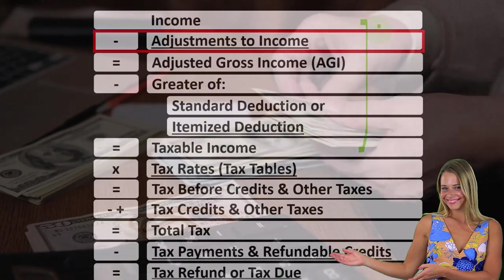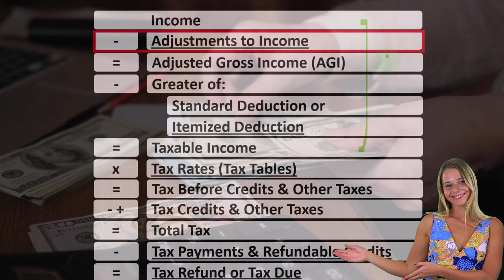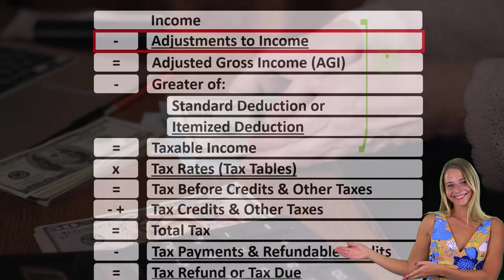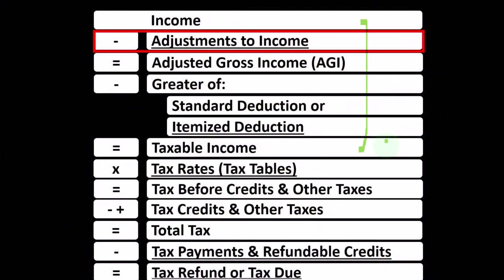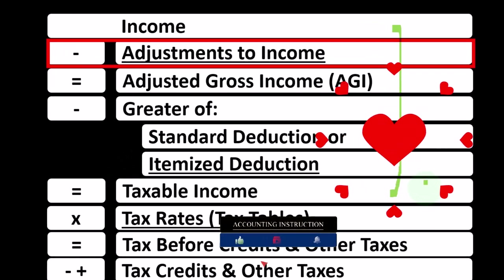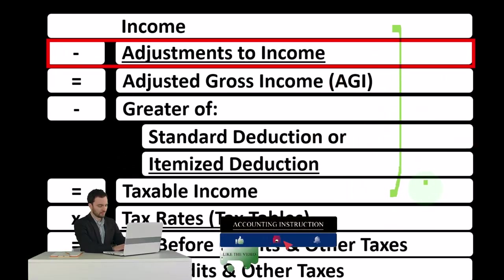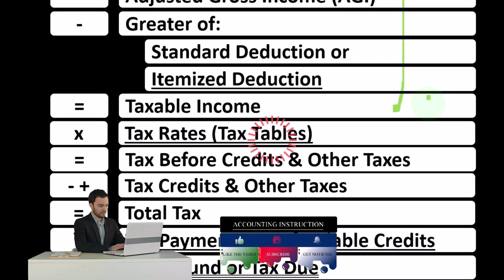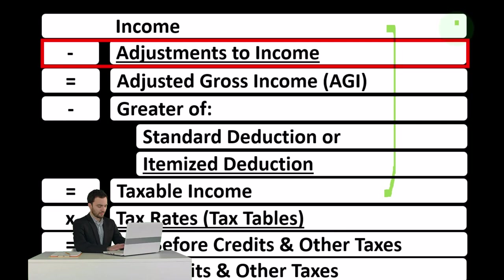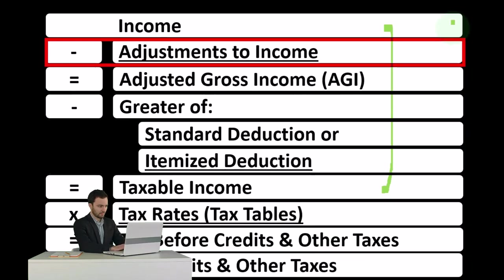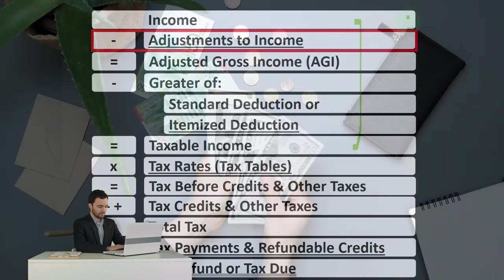We have income minus the equivalent of the expenses being the deductions, getting us down to the bottom line — the equivalent of net income — this being the taxable income. Remembering that our objective is upside down: we want the taxable income as low as possible, as opposed to a normal situation where we want net income as high as possible. In prior sections we looked at the income line. We would like to have income, but we'd like it to be exempt for taxes so we can have the taxable income in our formula as low as possible.